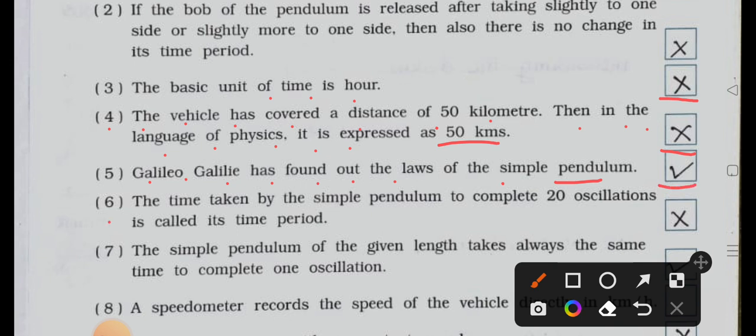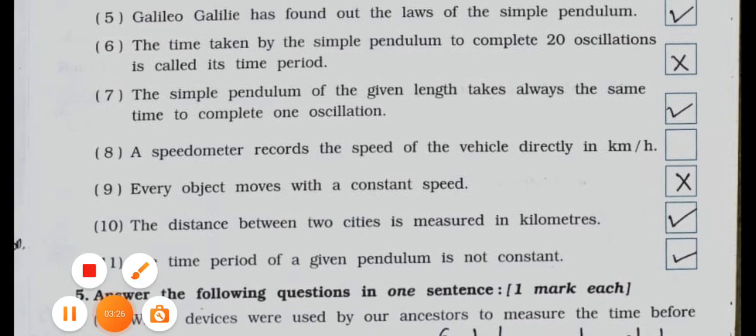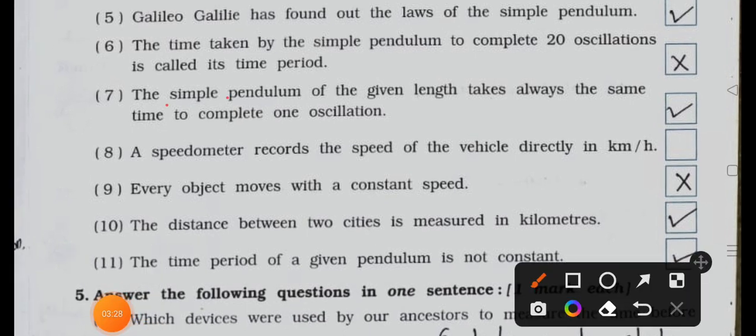Number five: Galileo Galilee has found out the laws of the simple pendulum. It's true, right. Number six: the time taken by the simple pendulum to complete 20 oscillations is called its time period. It's wrong, false.